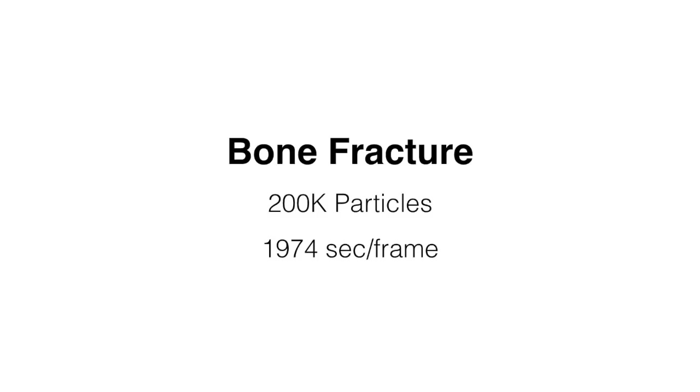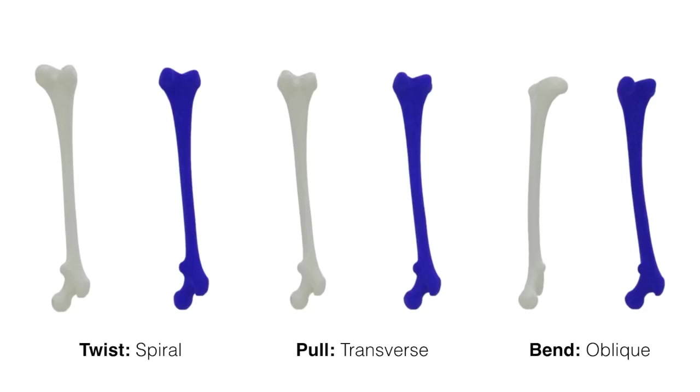Next, we demonstrate a real-world example. We capture three different types of bone fracture. Twisting produces a spiral fracture, pulling causes a transverse fracture, and bending creates an oblique fracture.